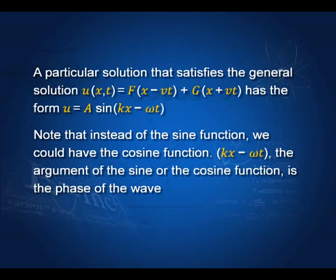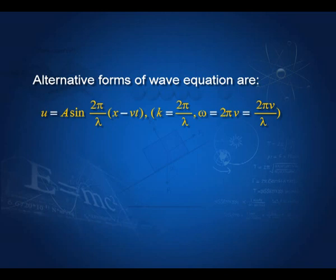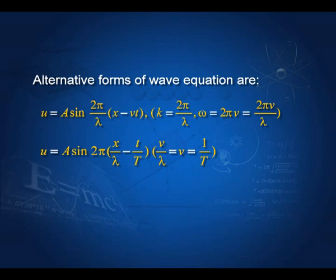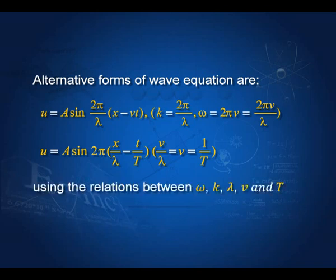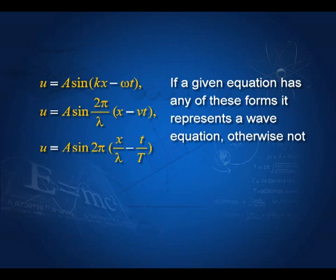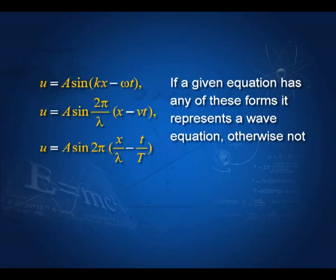The term in the brackets, kx − omega*t, is called the phase of the wave. Using the relations between lambda, nu, k, and omega, we can write the wave equation as u = A sin(2pi/lambda × (x − vt)) or u = A sin(2pi(x/lambda − t/T)). If you are given an equation, compare it with one of these standard forms — if it matches, it represents a wave; otherwise it does not. For example, the function u = 2*sqrt(x − vt) cannot be put in any of these forms and so cannot represent a wave.